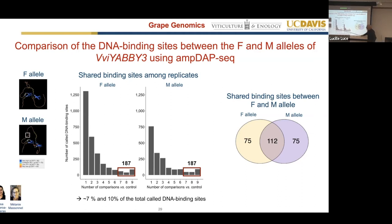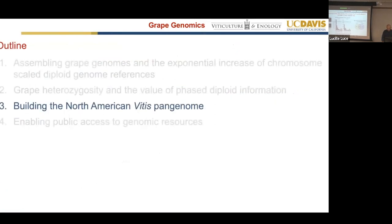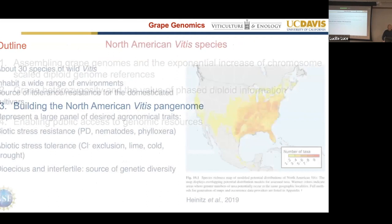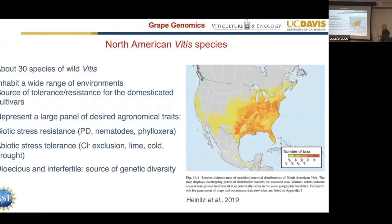The protein structure prediction doesn't fully help us because the single nucleotide polymorphism occurs in an interdomain region, and we cannot tell how protein functionality changes as a consequence of that single amino acid change. We're doing more experiments. Now a little bit about our effort to look at the North American Vitis genomes.